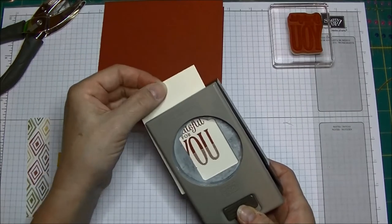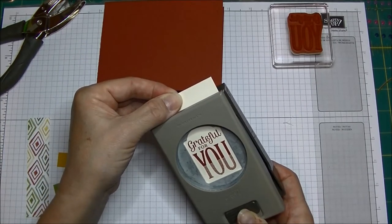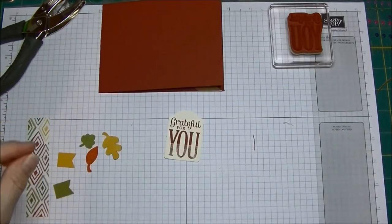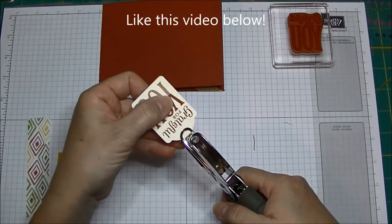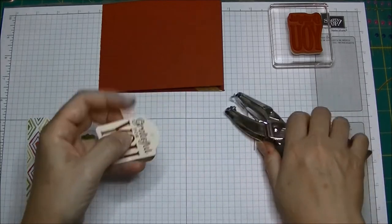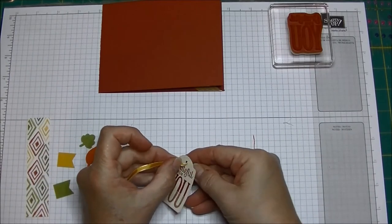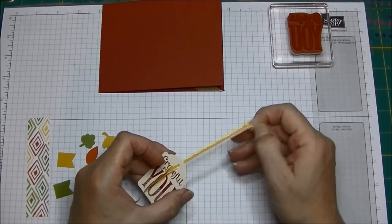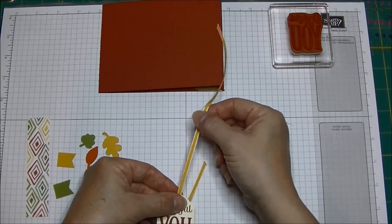This is the merry everything and there is a coordinating tag punch in the holiday catalog that goes with this. I'm just going to slide this in, line it up, punch that out. Then I have my one eighth inch handheld circle punch and I punch a hole in the top of this just like that. I've got a piece of crushed curry ribbon, this is the one eighth inch taffeta crushed curry, really like this little ribbon.